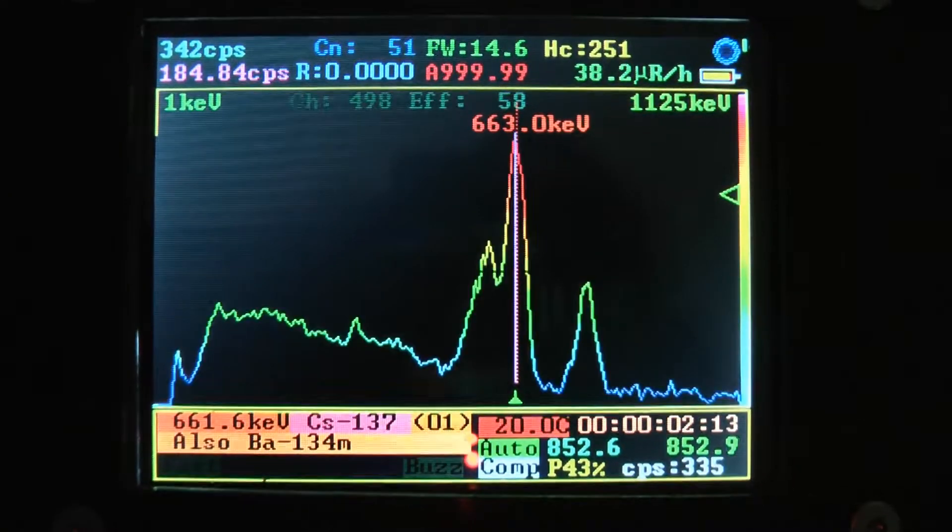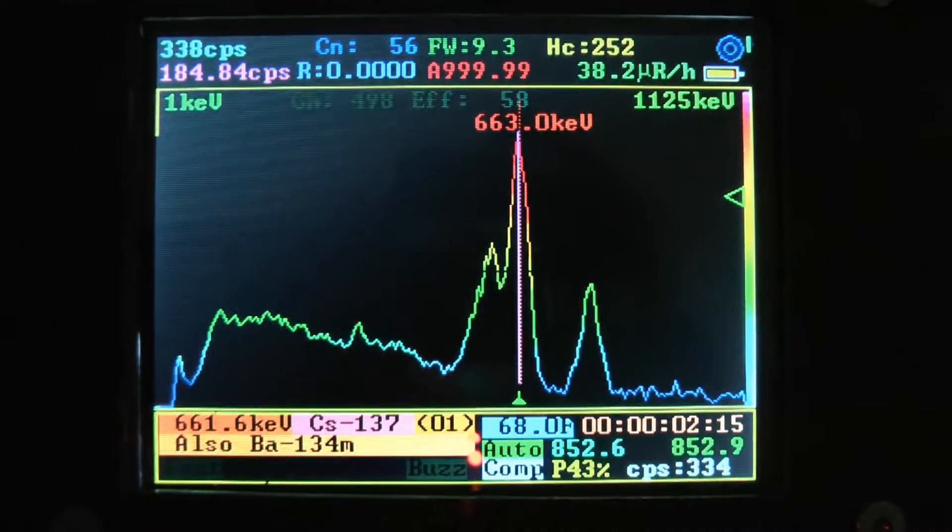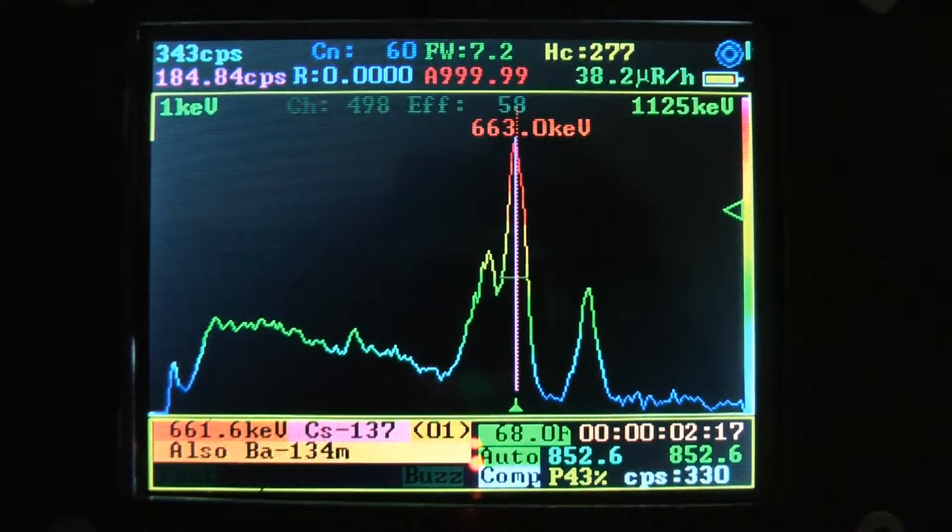The large peak in the center is from Caesium-137. The smaller peaks are from Caesium-134.